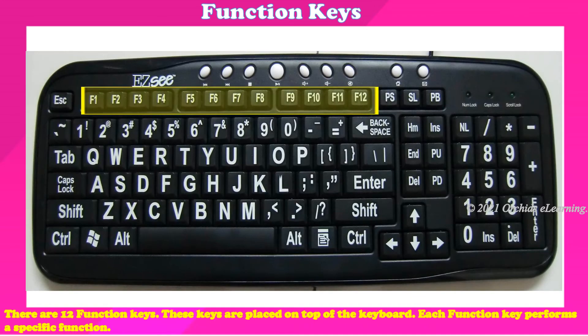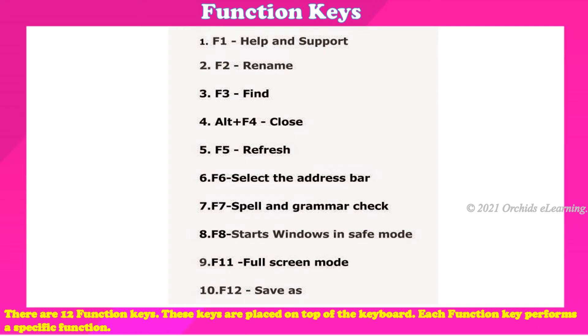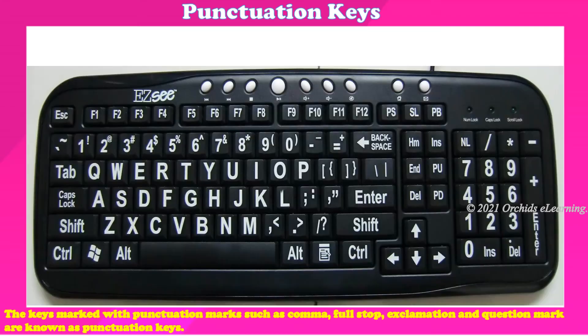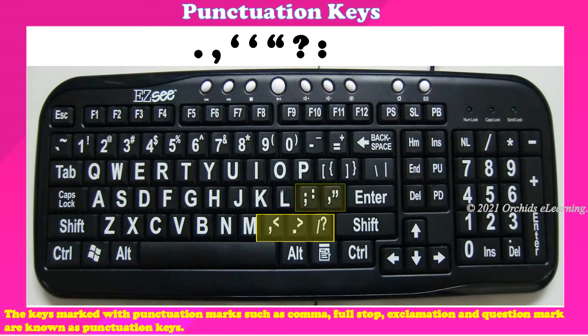There are 12 function keys, placed on the top of the keyboard. Each function key performs a specific function. The keys marked with punctuation marks such as comma, full stop, exclamation, and question mark are known as punctuation keys.